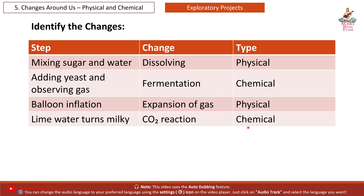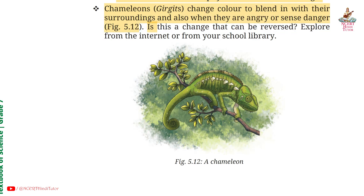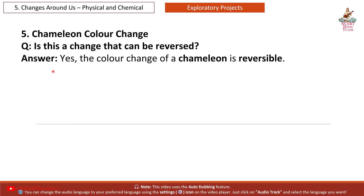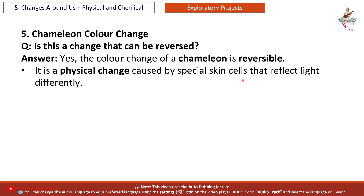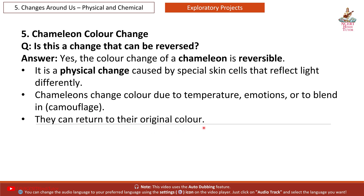Chameleons change color to blend in with their surroundings and also when they are angry or sense danger. Is this a change that can be reversed? Answer: Yes, the color change of a chameleon is reversible. It is a physical change caused by special skin cells that reflect light differently. Chameleons change color due to temperature, emotions or camouflage. They can return to their original color.